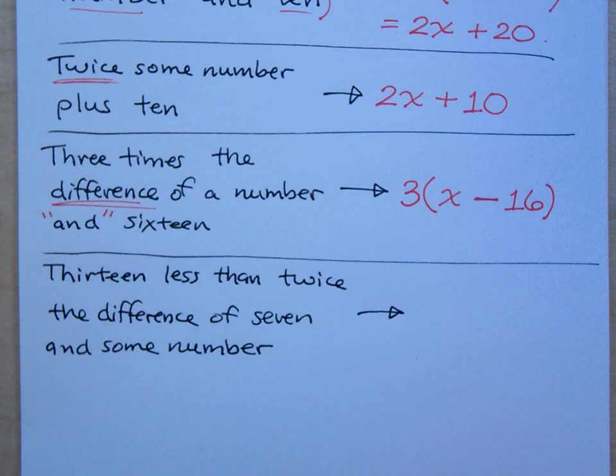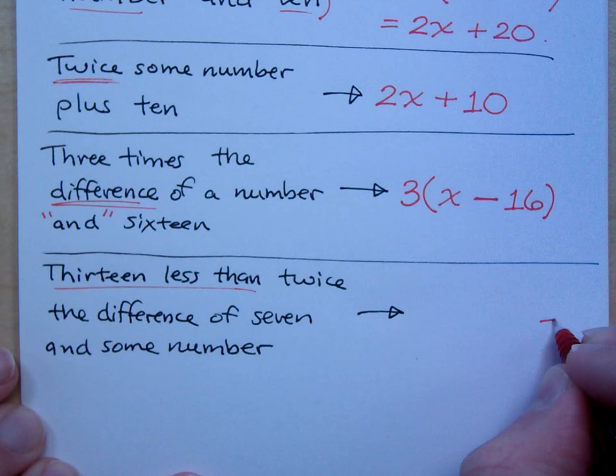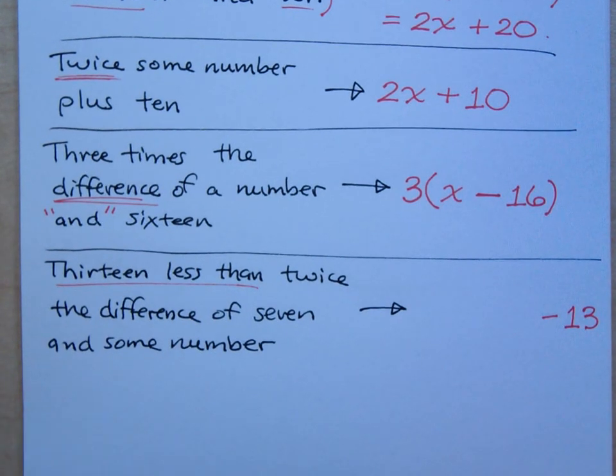When we see the phrases more than and less than, that's stuff that needs to be done at the end of the problem. So when I see thirteen less than, when I see this guy right here, that means I'm going to be subtracting thirteen from whatever follows that.